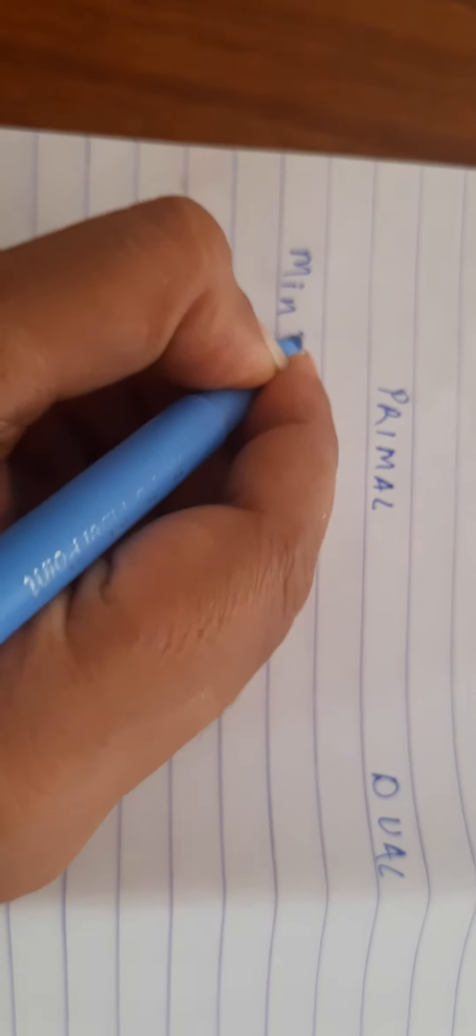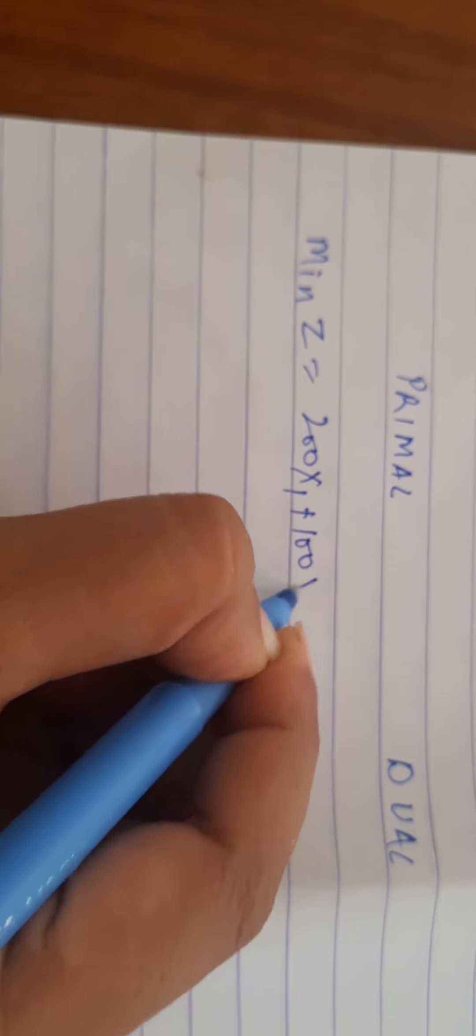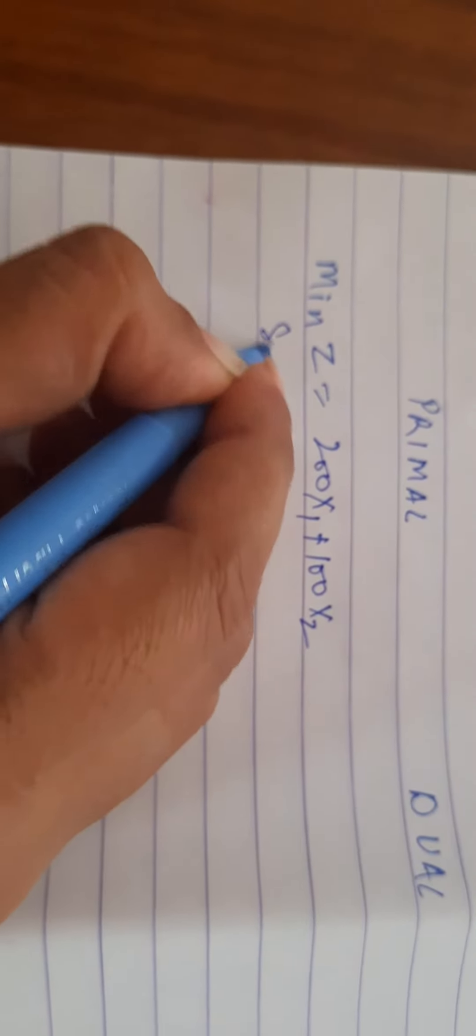So primal and dual, suppose my statement is minimize and say it equals 200x1 plus 100x2 subject to constraints.